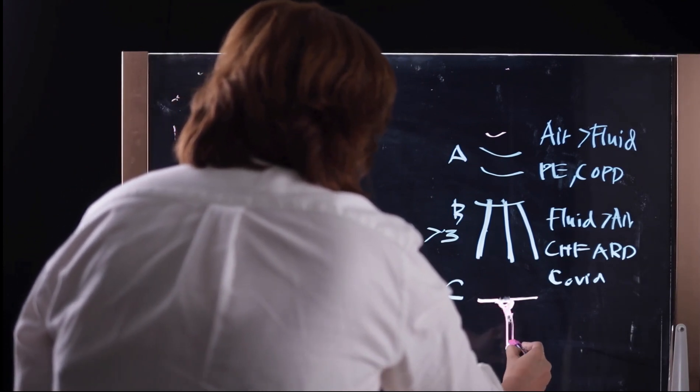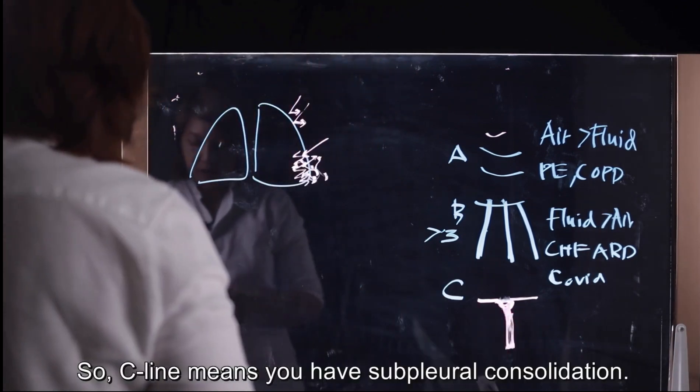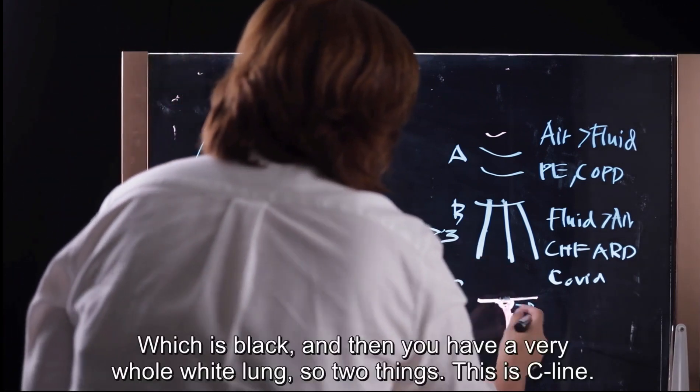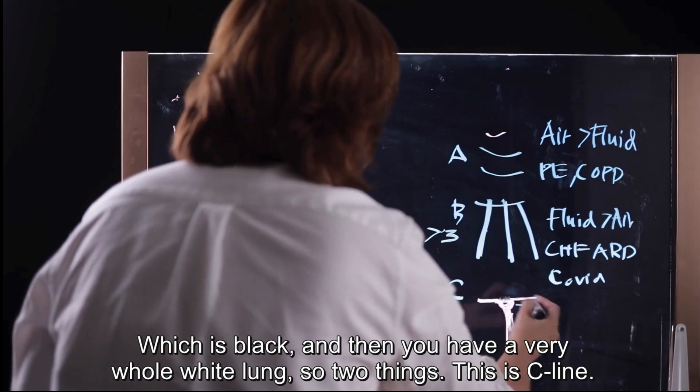So this is C-line here. C-line means you have sub-pleural line consolidation, which is black, and then you have a vertical white line. So two things. So this is C-line.